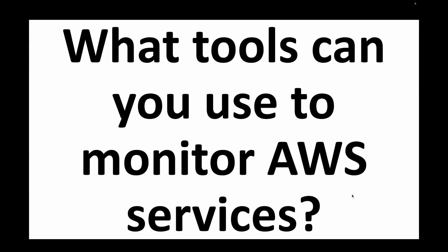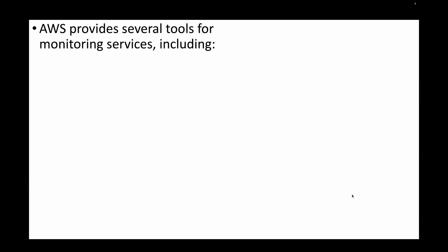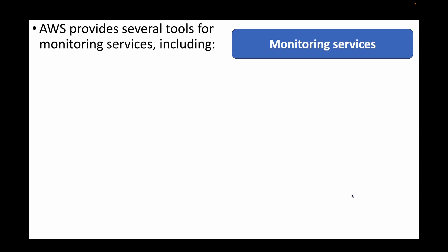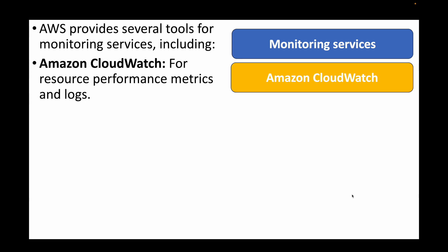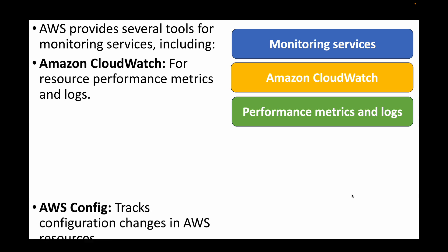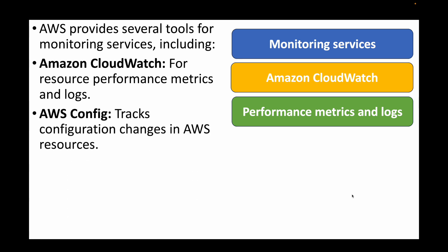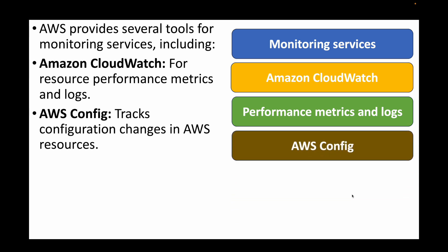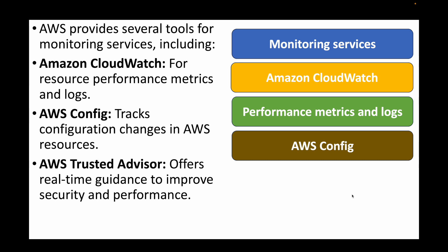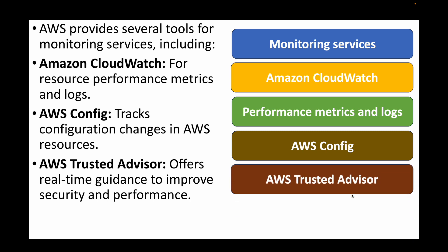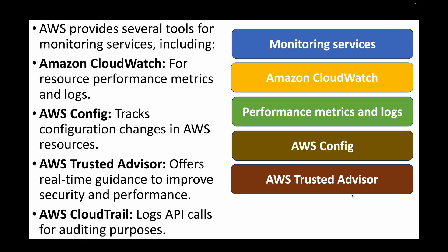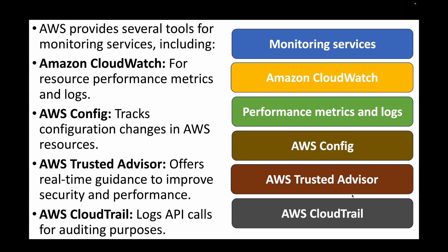The next question is: what tools can you use to monitor AWS services? AWS provides lots of tools for monitoring. We have Amazon CloudWatch, which can be used to monitor performance metrics and capture the logs of your applications. We have AWS Config, which tracks configuration changes within AWS resources. Then AWS Trusted Advisor, which offers real-time guidance to improve your security and overall performance. And finally CloudTrail, which is your auditing service used to log all API calls for auditing purposes.